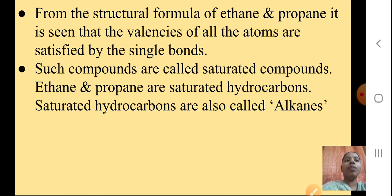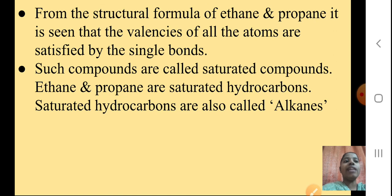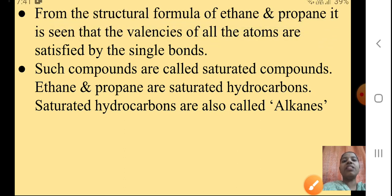From the structural formula of Ethane and Propane, it is seen that the valencies of all the atoms are satisfied by single bonds. Such compounds are called saturated compounds. Ethane and Propane are saturated hydrocarbons because they are satisfied by single bonds — when you have single bonds, they are saturated hydrocarbons. Saturated hydrocarbons are also called alkanes — important to remember this. They have the presence of single bonds.